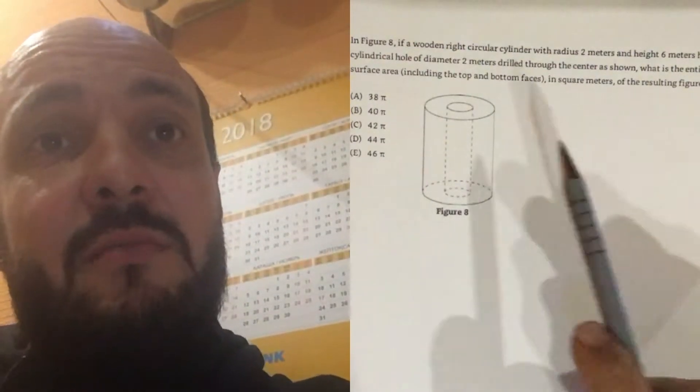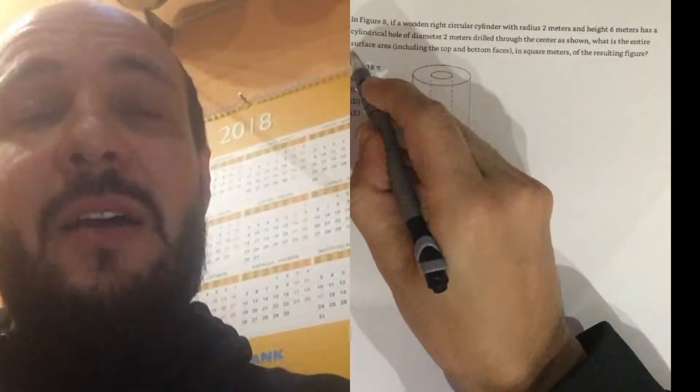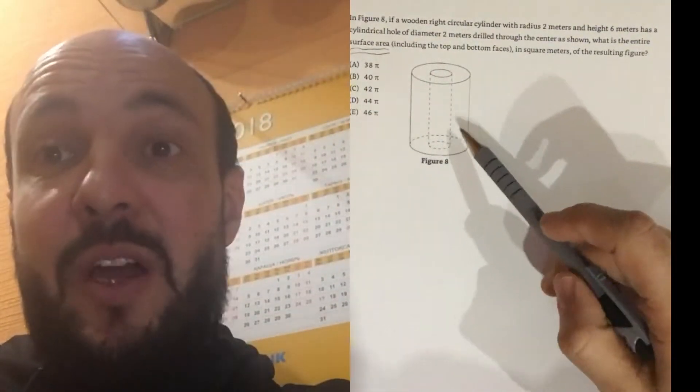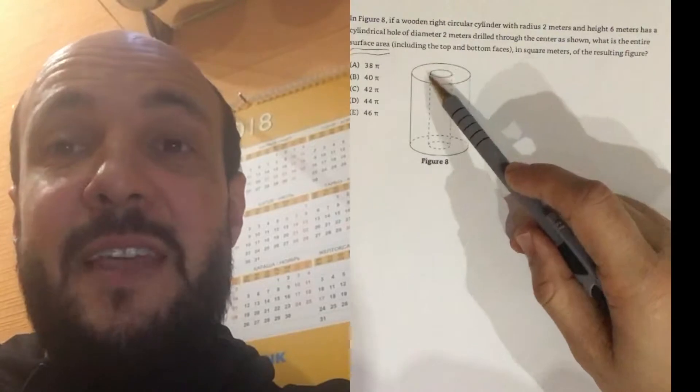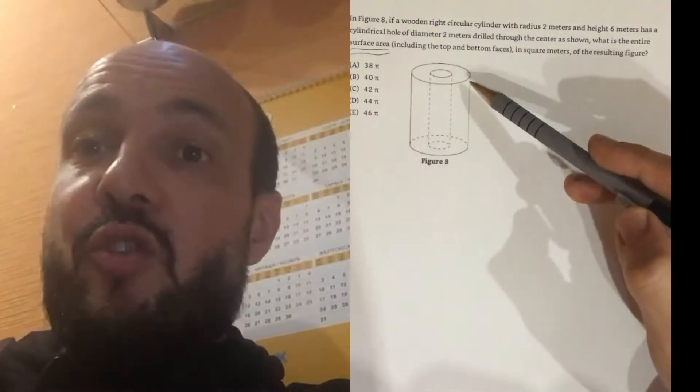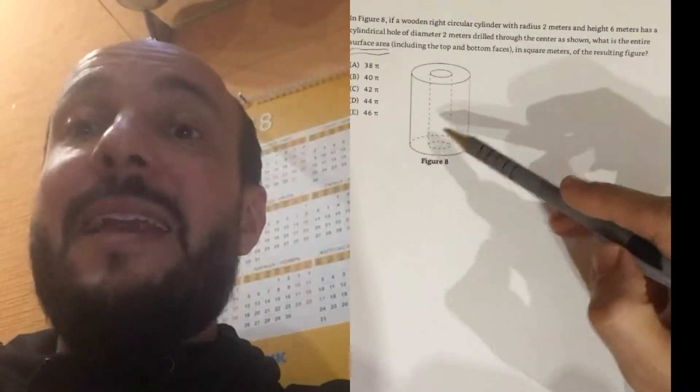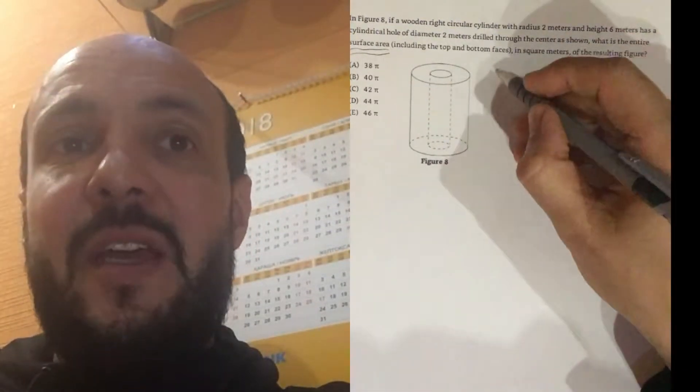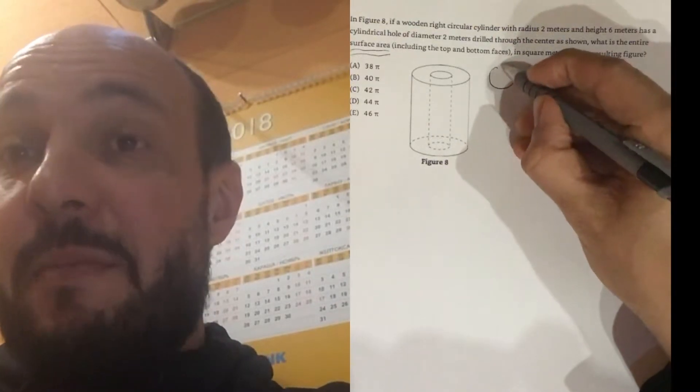So, our question is asking us about surface area. It wants to know the surface area of this cylinder with the hole in the middle. The surface area is what the cylinder would touch if you were to drop it into water. If you were to paint the cylinder, it's the things that will be covered by paint. It's different to the volume.